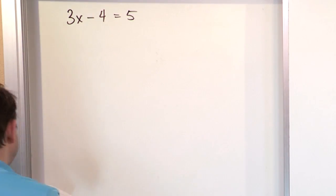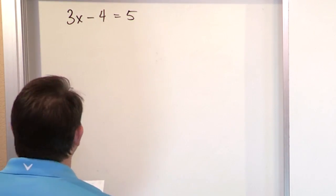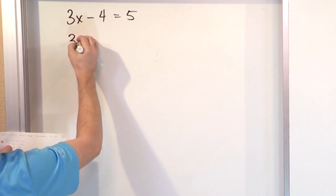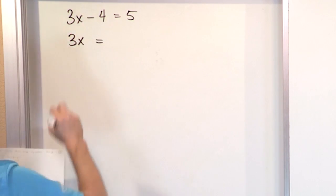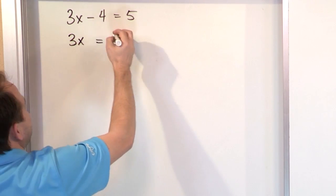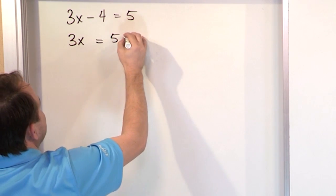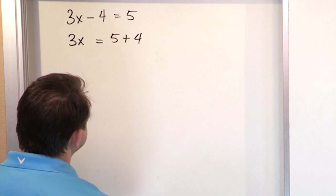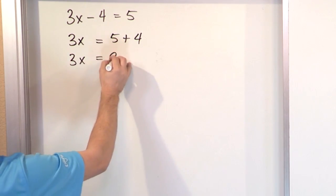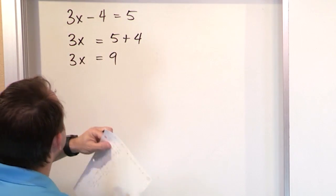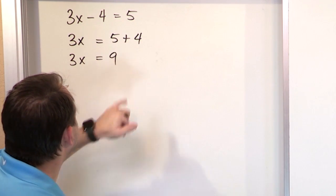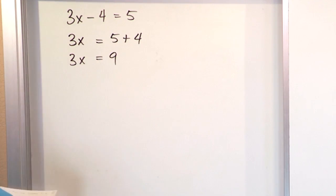So in this case, what we're going to do is add 4 to both sides. On the left, when we add 4, we're just going to have 3x left over because the negative 4 and positive 4 cancel to 0. On the right-hand side, we also add 4, giving us 9, which is effectively 5 plus 4.